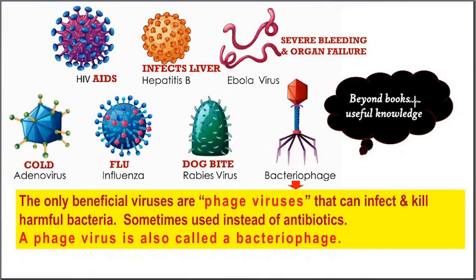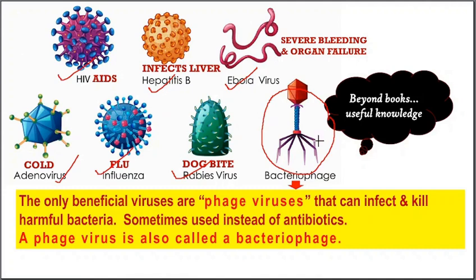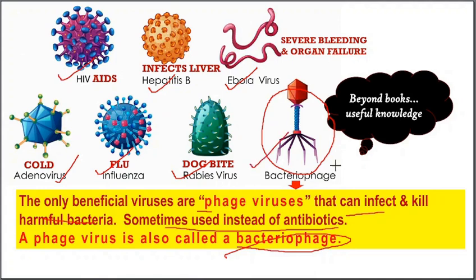Let us take viruses first. Diseases caused by viruses include HIV or AIDS, hepatitis B infecting the liver, Ebola virus causing severe bleeding and organ failure, adenovirus causing common cold, influenza virus causing flu, and rabies. The only useful virus is the bacteriophage or phage virus, because it can infect and kill harmful bacteria, and is sometimes used in place of antibiotics.